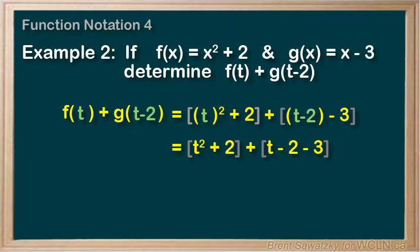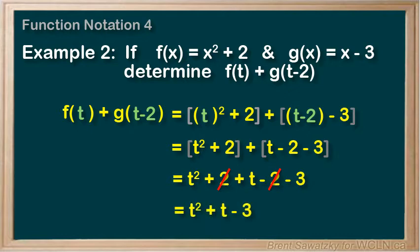Now we can remove some brackets, noting carefully that they didn't impact anything in this case, but we were careful and included them. And we have t squared plus t minus 3.